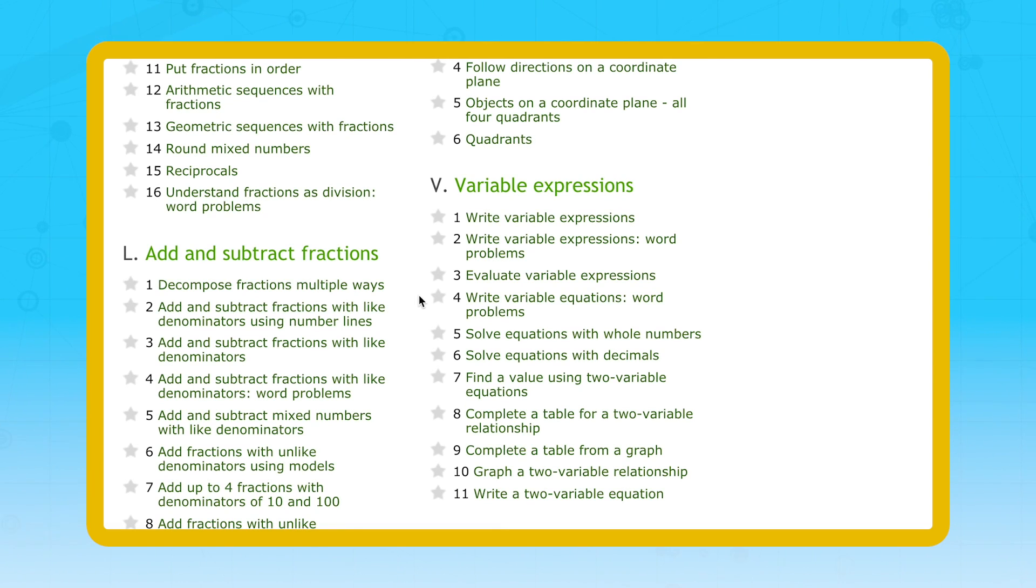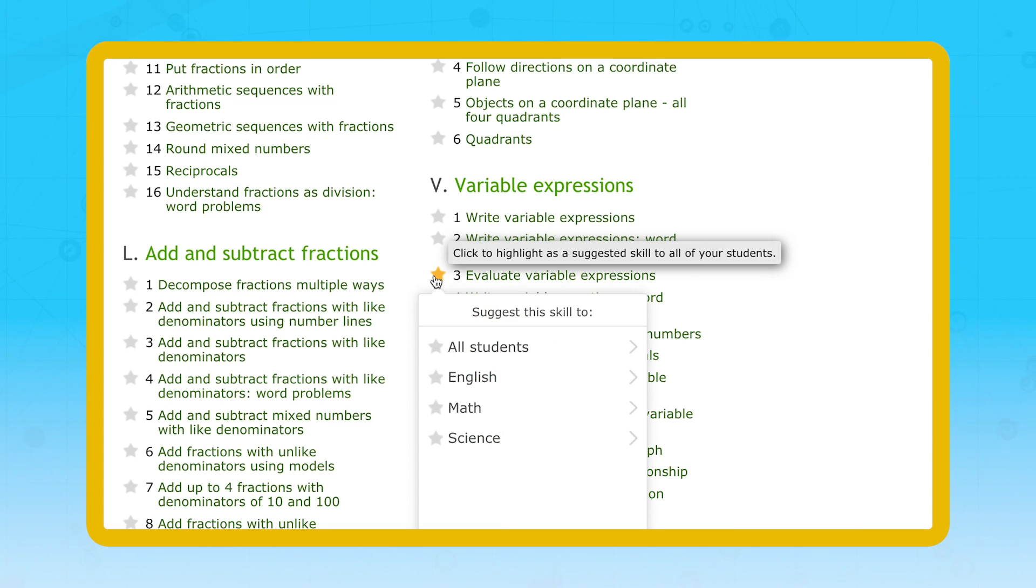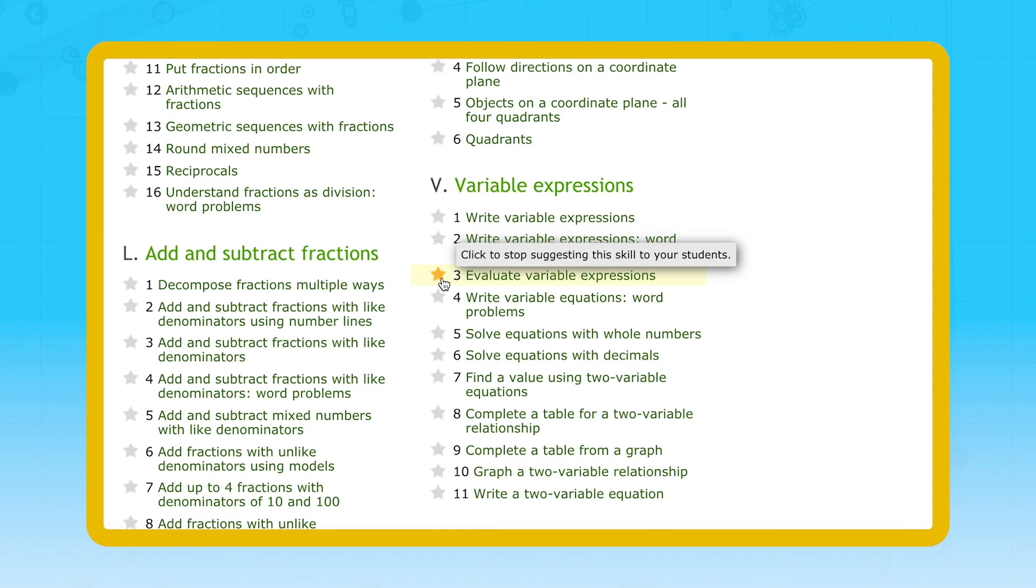To suggest a skill, hover your mouse over the gray star to the left of the skill name. A menu will appear with a list of your students grouped by class. From there, click the stars to suggest the skill to a student or class. Click the star again to remove the suggestion.